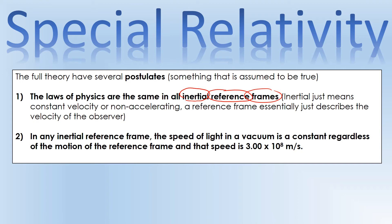So the laws of physics are the same in all non-accelerating reference frames. The second postulate is that in any inertial reference frame, the speed of light in a vacuum is a constant regardless of the motion of the reference frame, and that speed is 3 × 10⁸ m/s. This is very counterintuitive, and this is what really confuses people about special relativity, because it doesn't work the way we think it should.